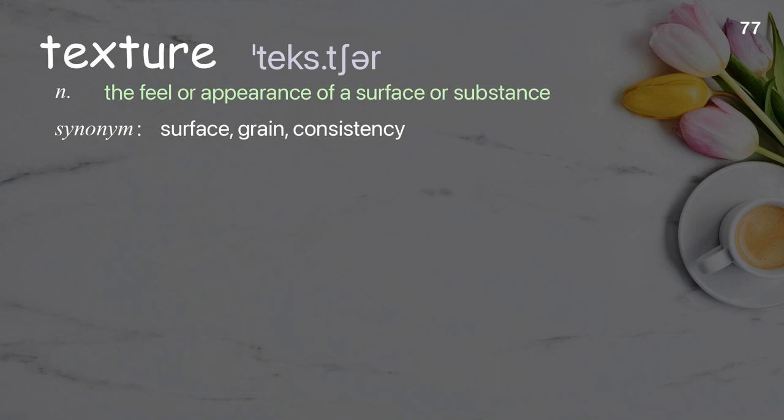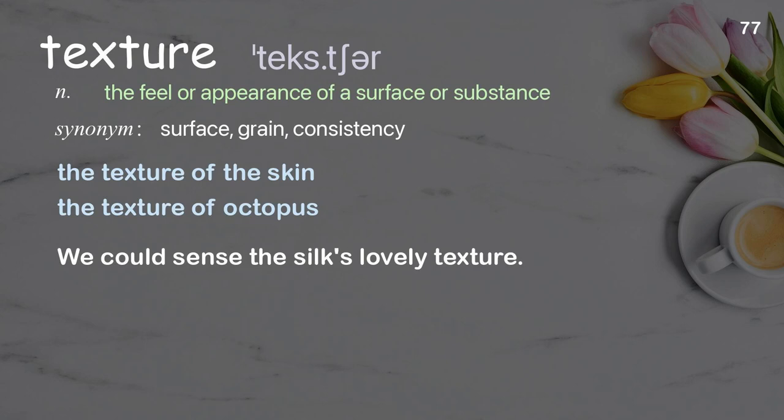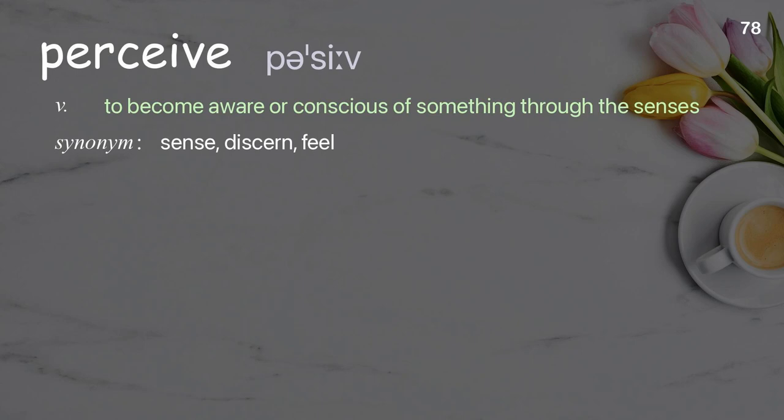Texture: The feel or appearance of a surface or substance. Examples: the texture of the skin, the texture of octopus. We could sense the silk's lovely texture.